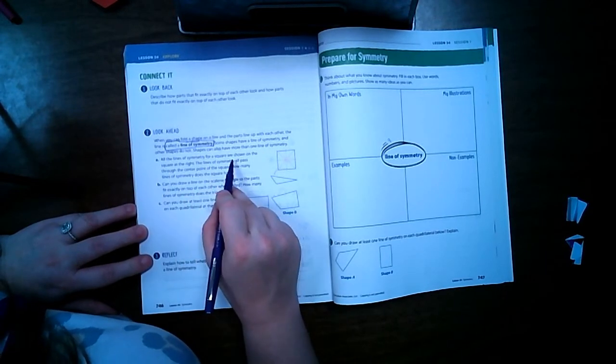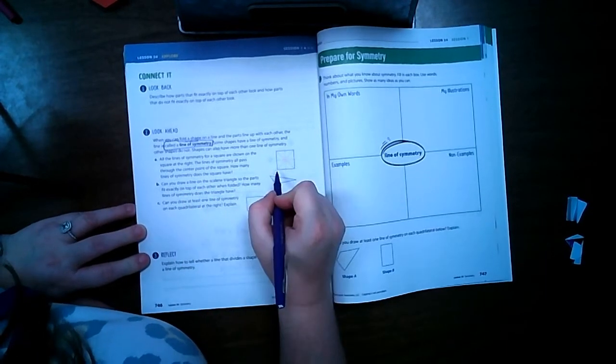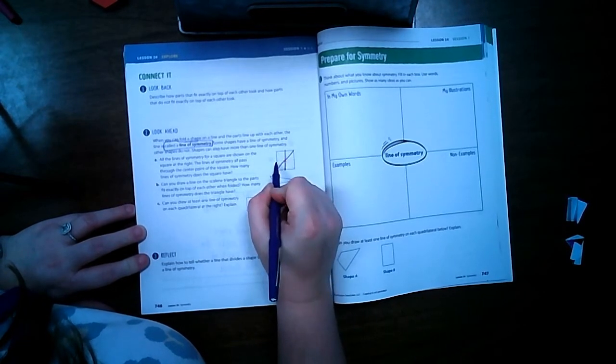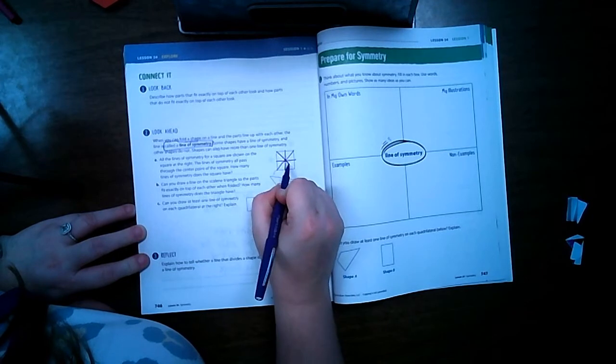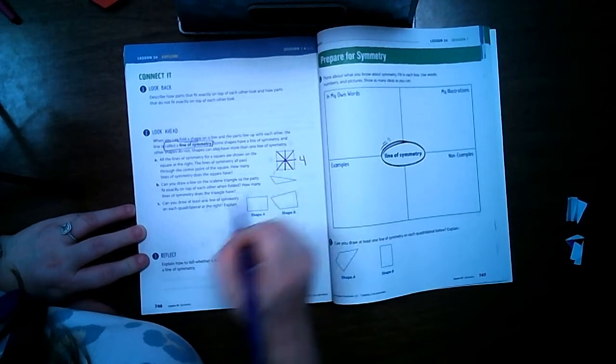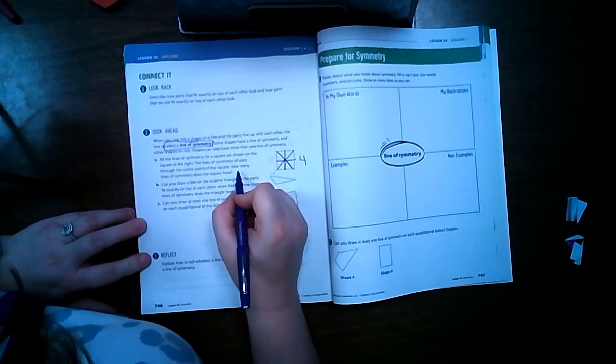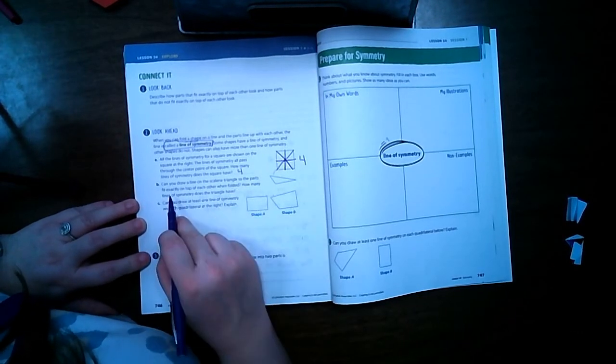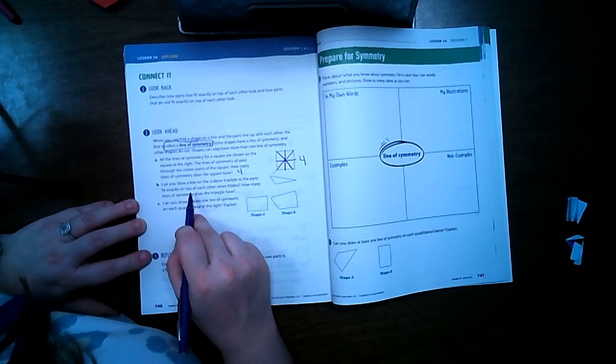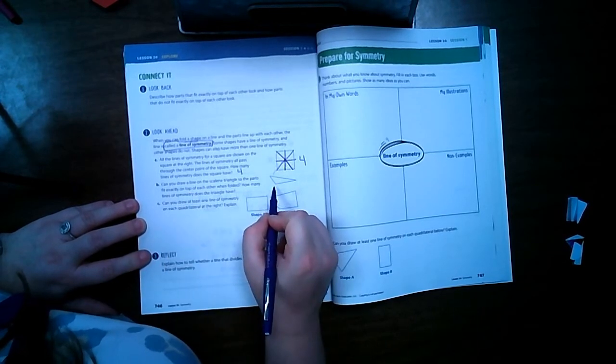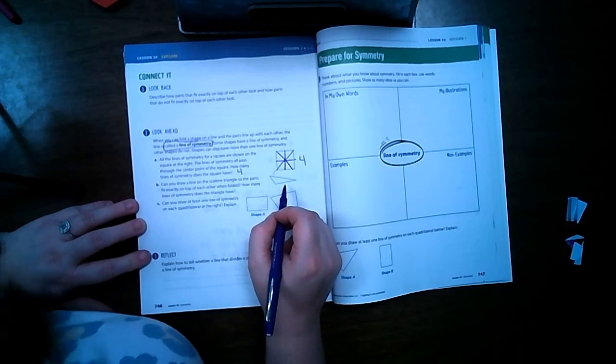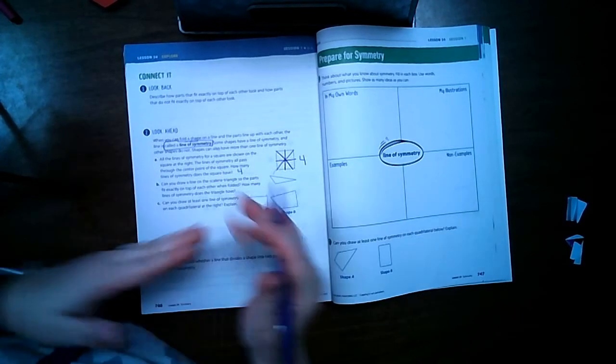All lines of symmetry for a square are shown here. So a square has one, two, three, four lines of symmetry. Can you draw a line on the scalene triangle so the parts fit exactly on top of each other? Can we draw a line anywhere on this shape to make it where it would close right over on each other?